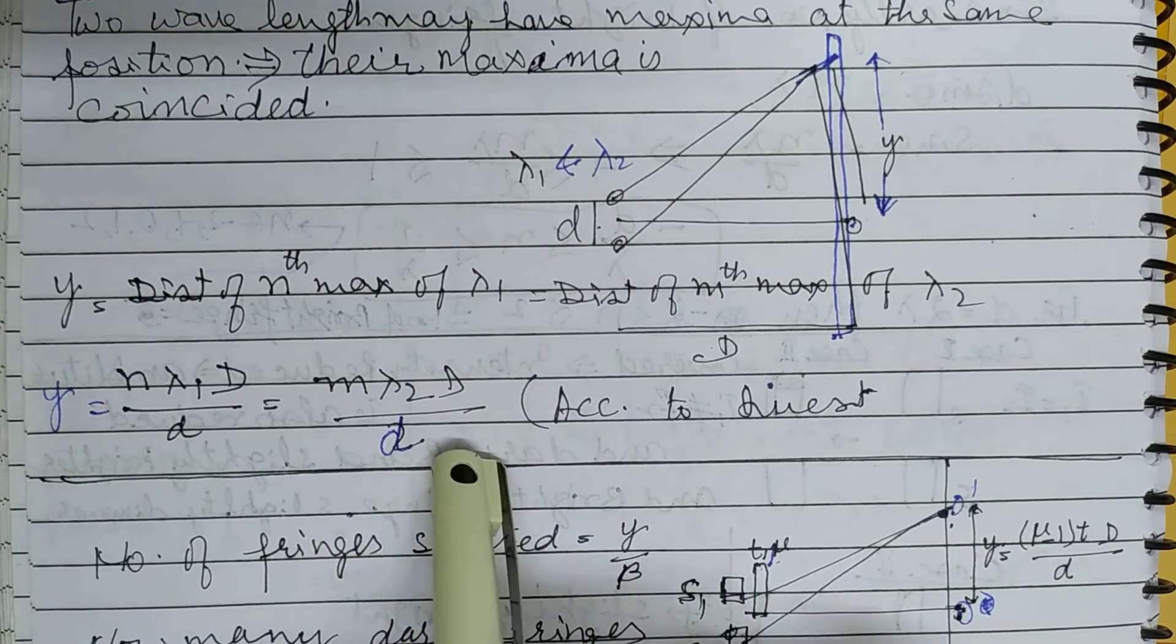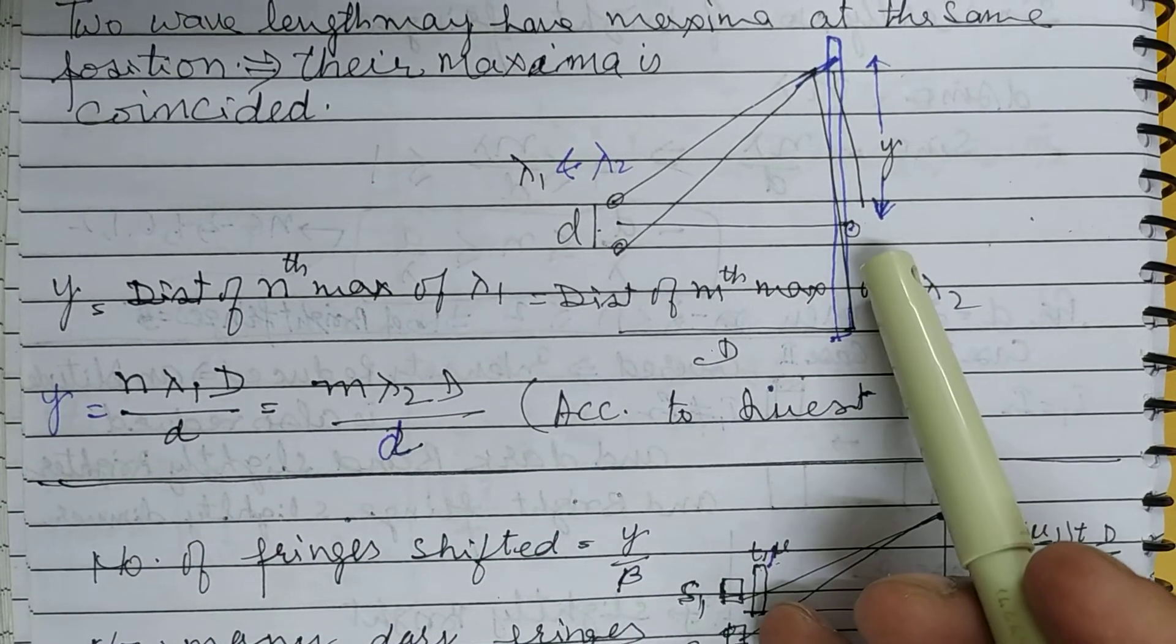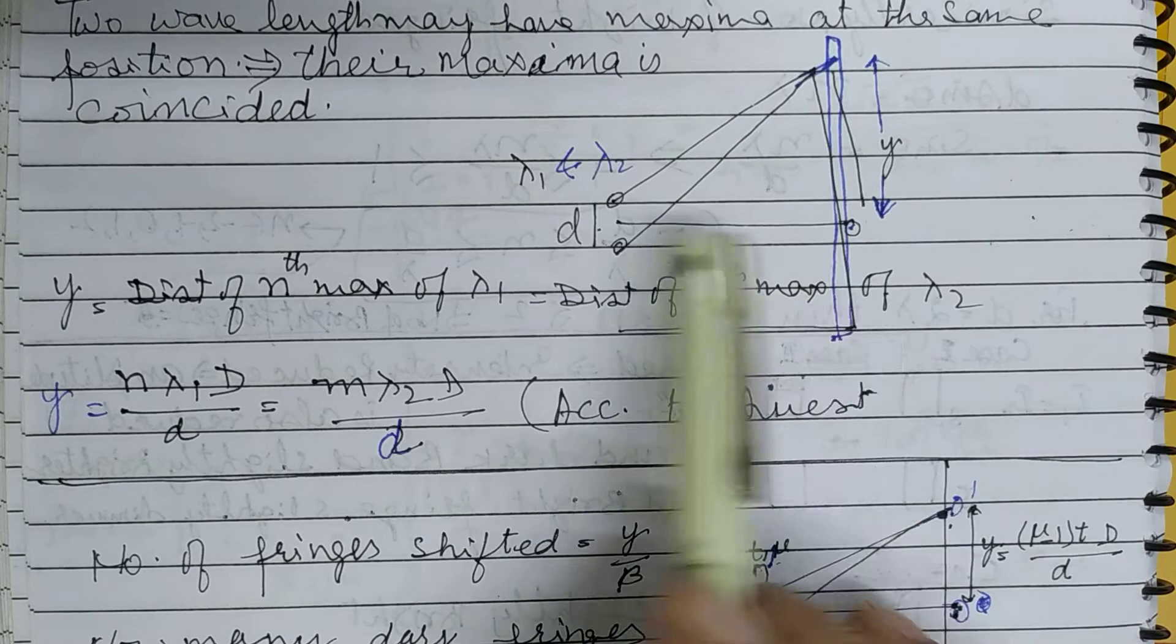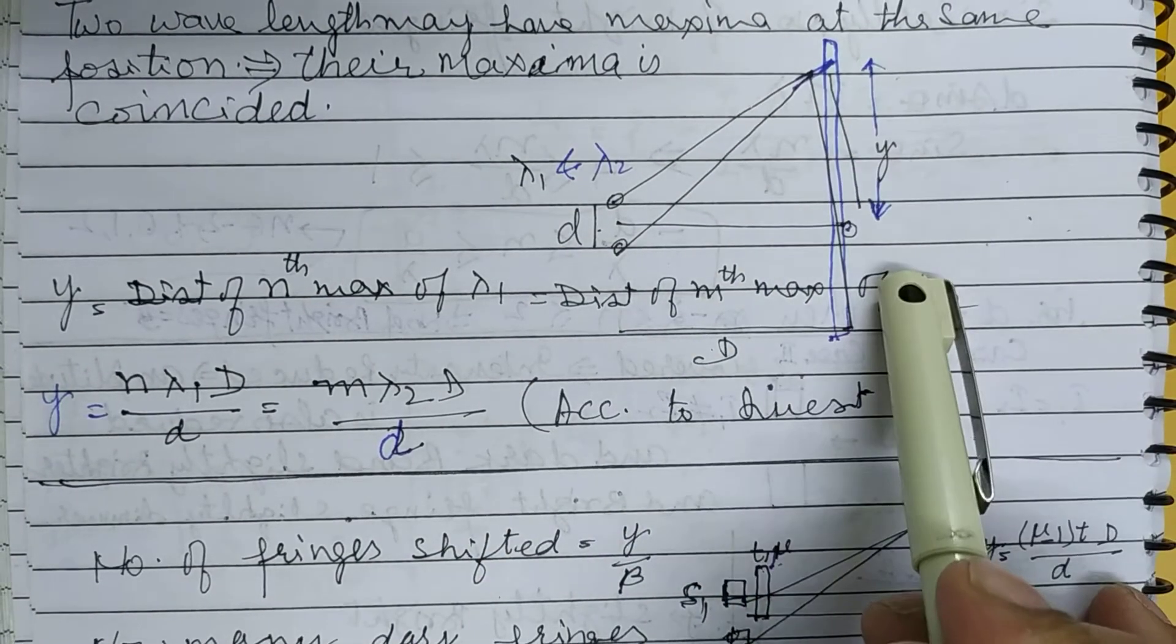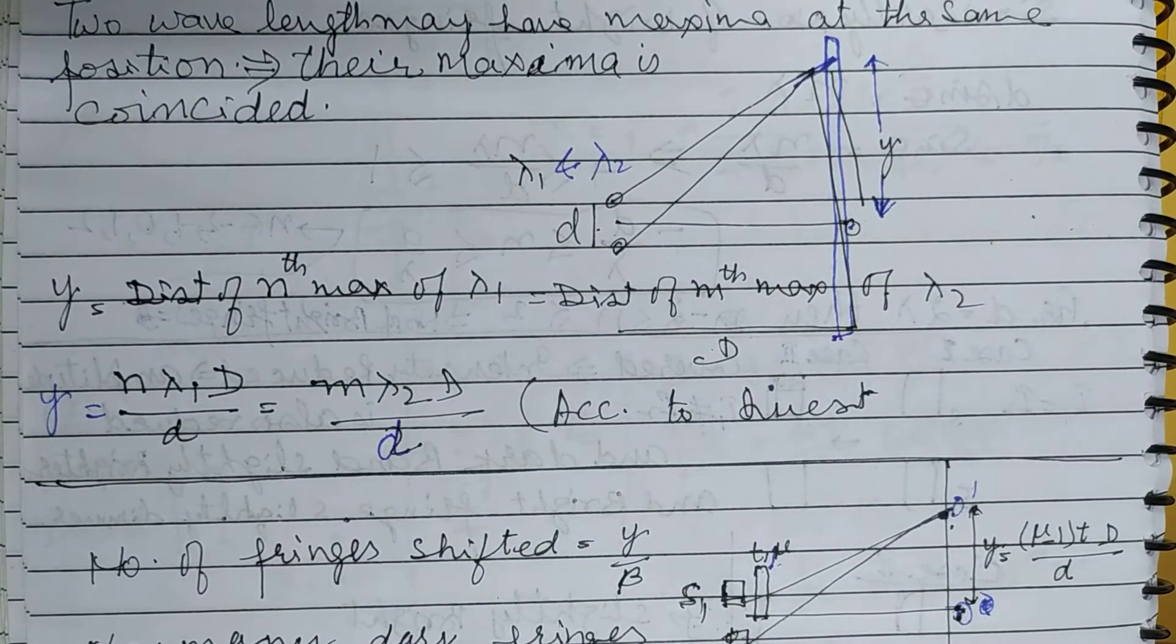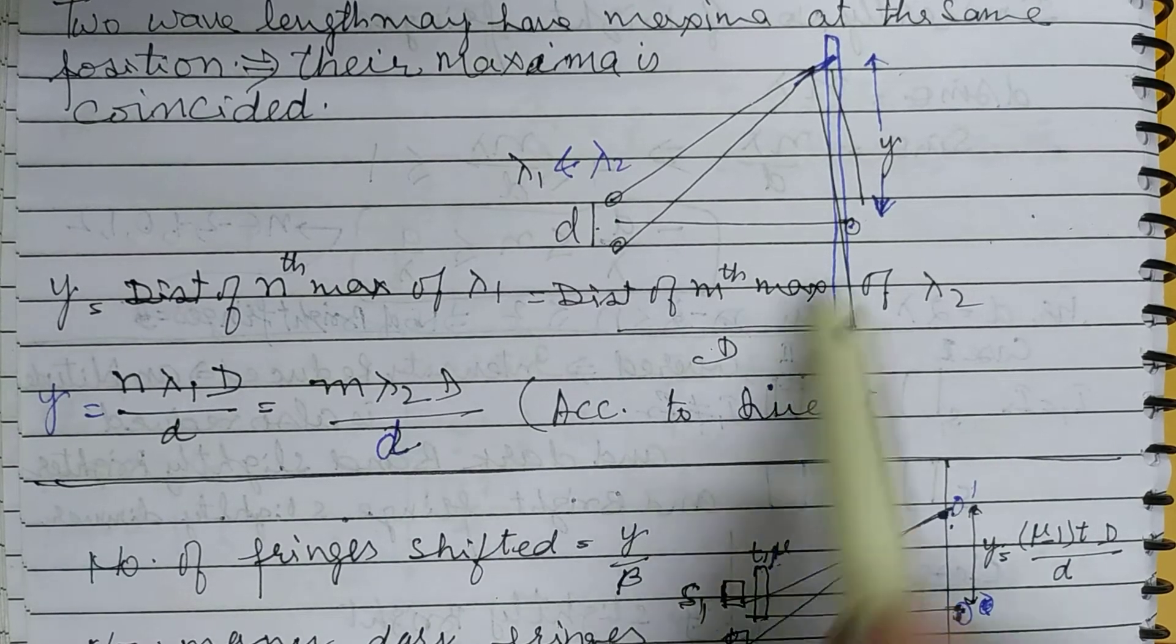This is the principle on which basis they can ask you anything. They can ask capital D, small d, y, and so on. This is the principle.